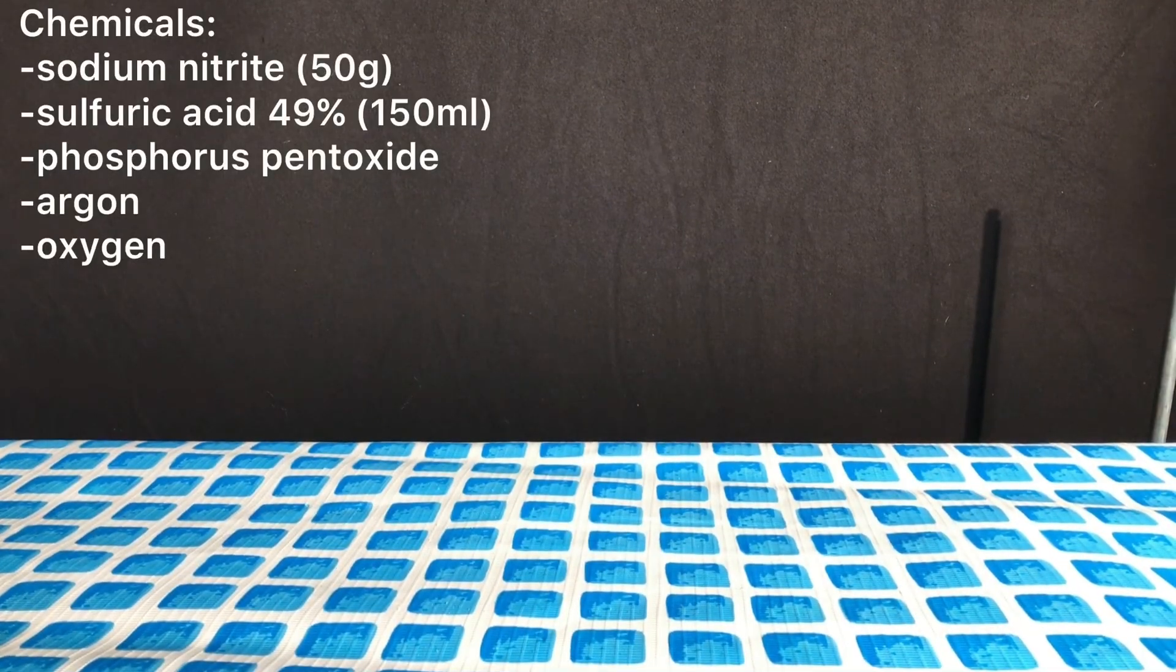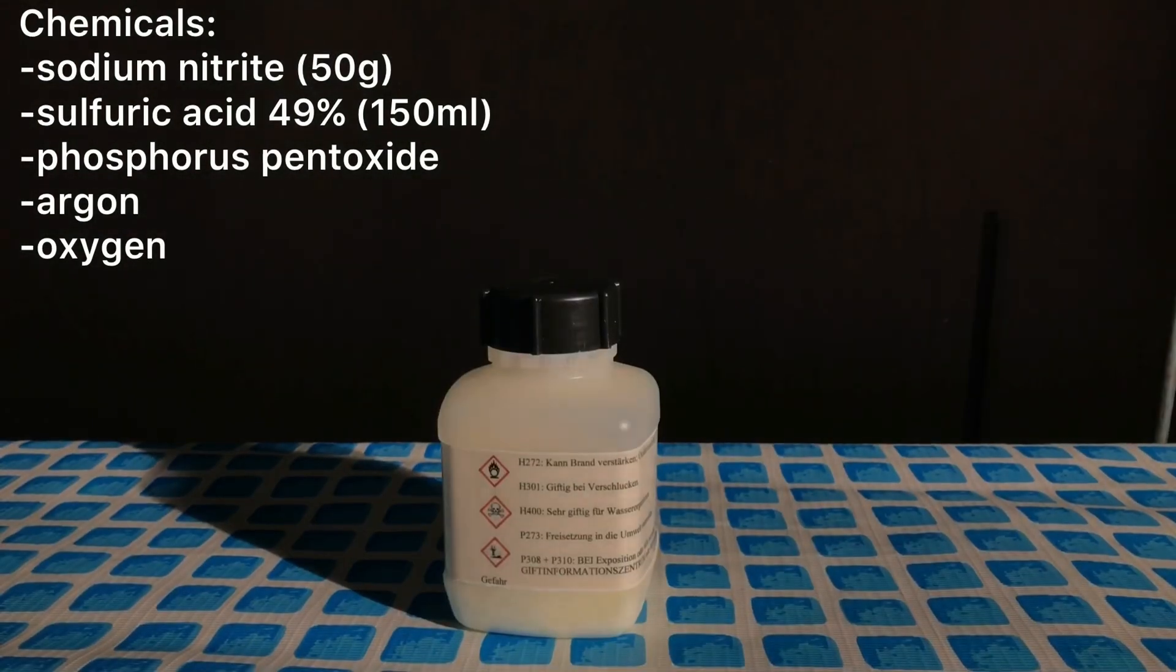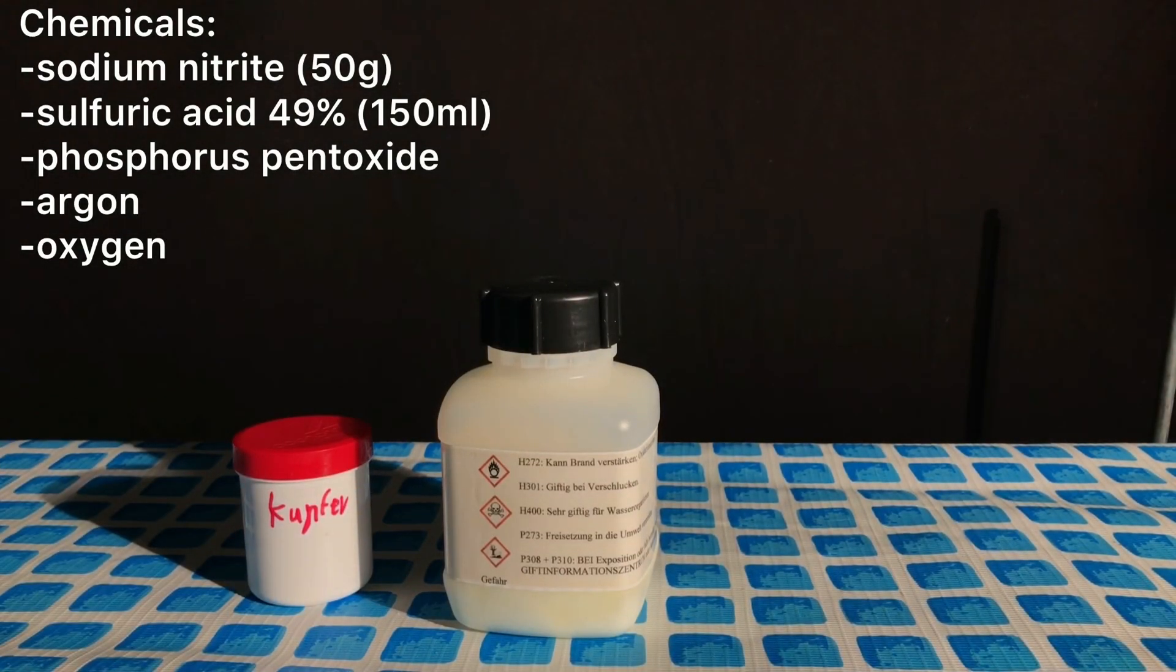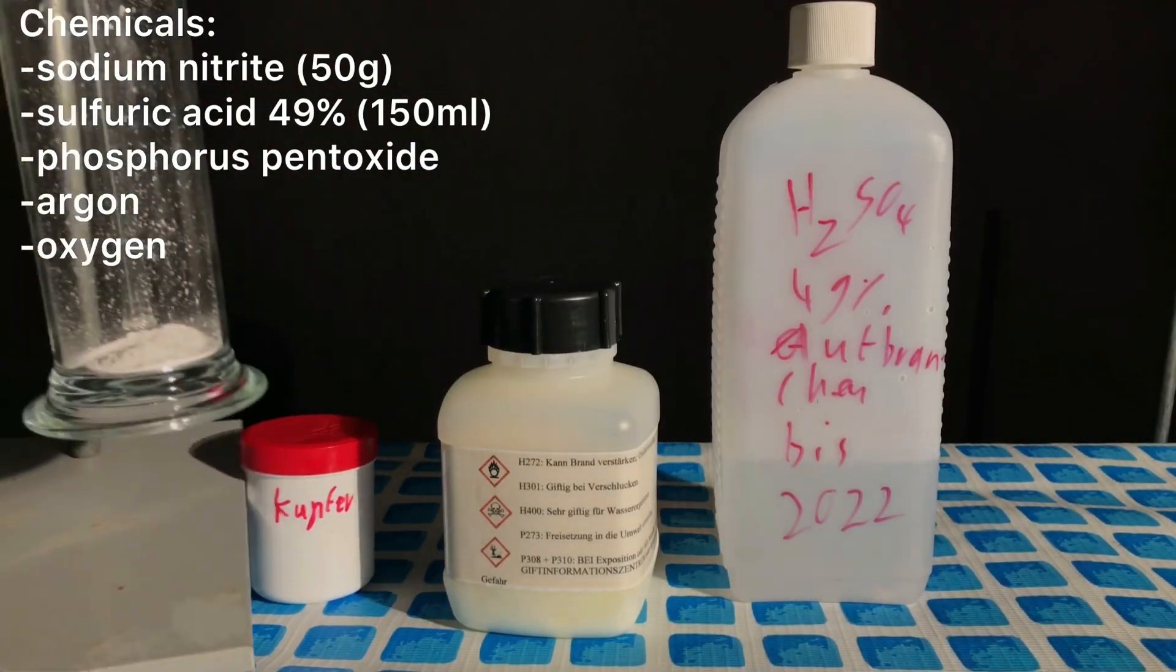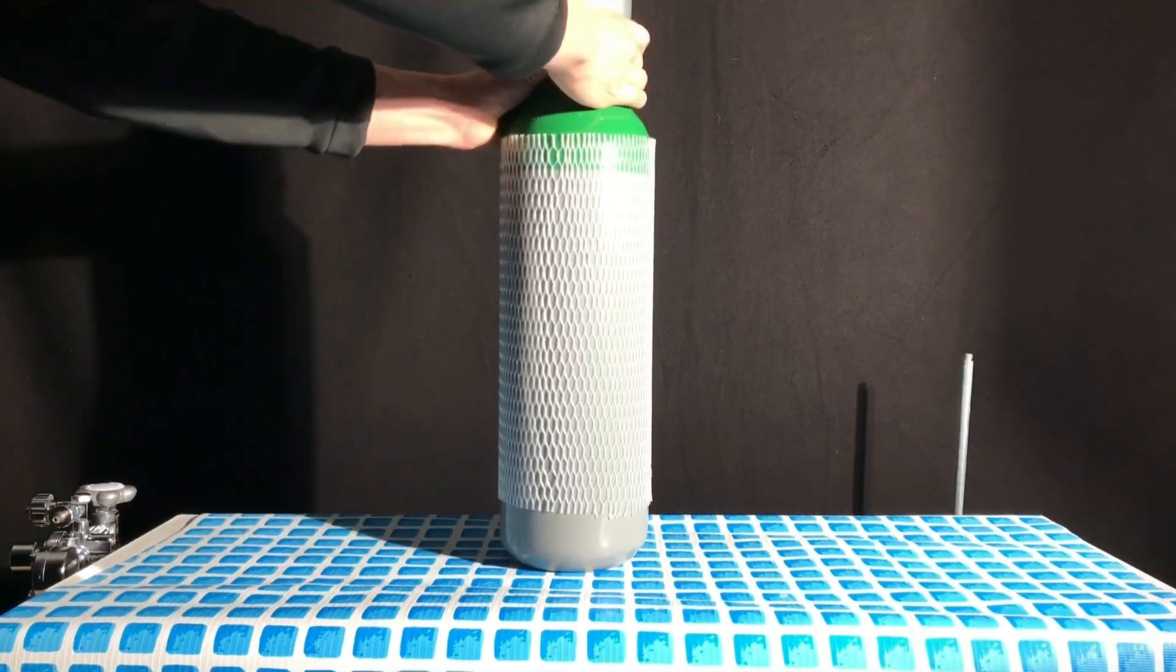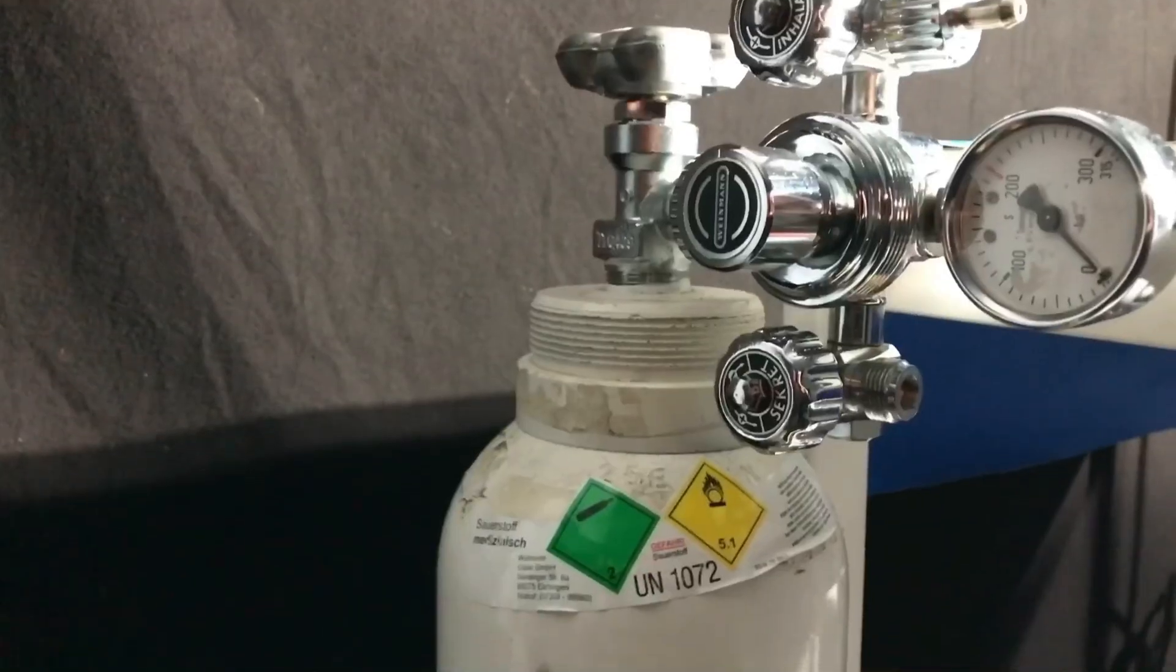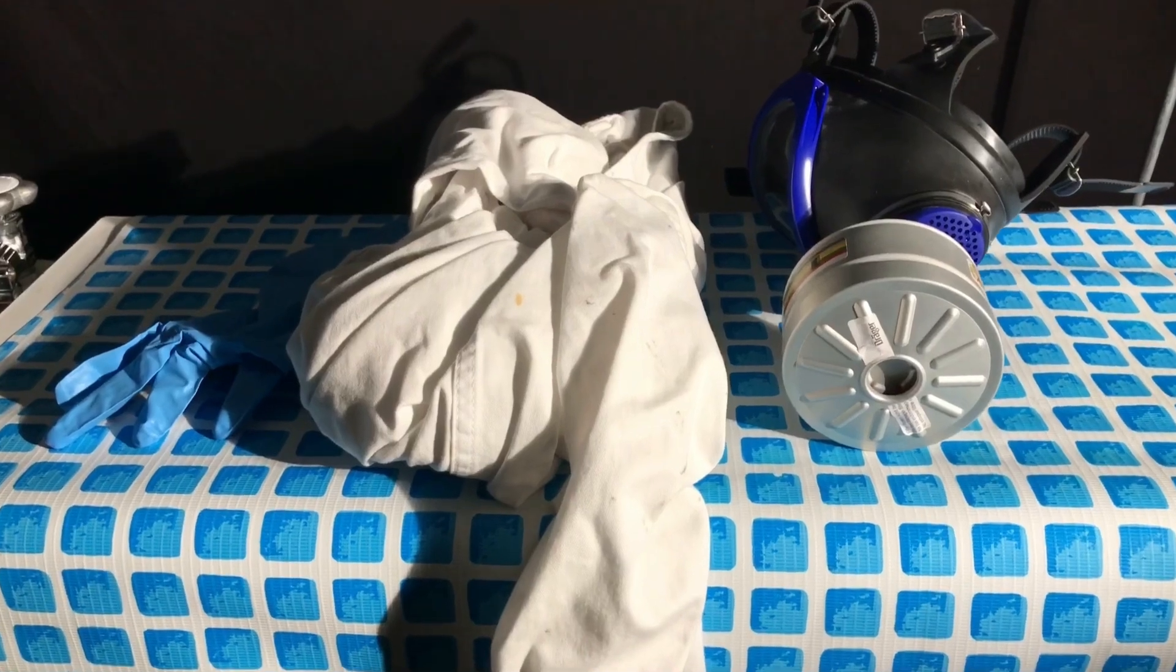For this preparation, 50 grams of sodium nitrite, 150 milliliters of 49% sulfuric acid, which represents a huge excess of sulfuric acid, phosphorus pentoxide, argon and oxygen are needed. The argon will be used to create an inert atmosphere in the beginning. This ensures dinitrogen trioxide formation. The oxygen will be used to oxidize that further to nitrogen dioxide.